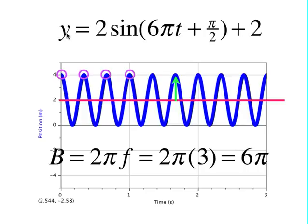So our final equation says y equals 2 sine 6 pi t plus pi over 2 plus 2. The first 2 is your amplitude. Your 6 pi is determined by the frequency. The pi over 2 is your phase shift and the 2 is your vertical shift.